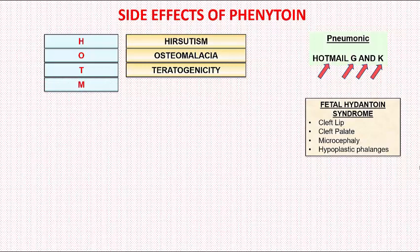Next is the letter M. M stands for megaloblastic anemia. This occurs due to low folic acid levels caused by phenytoin.